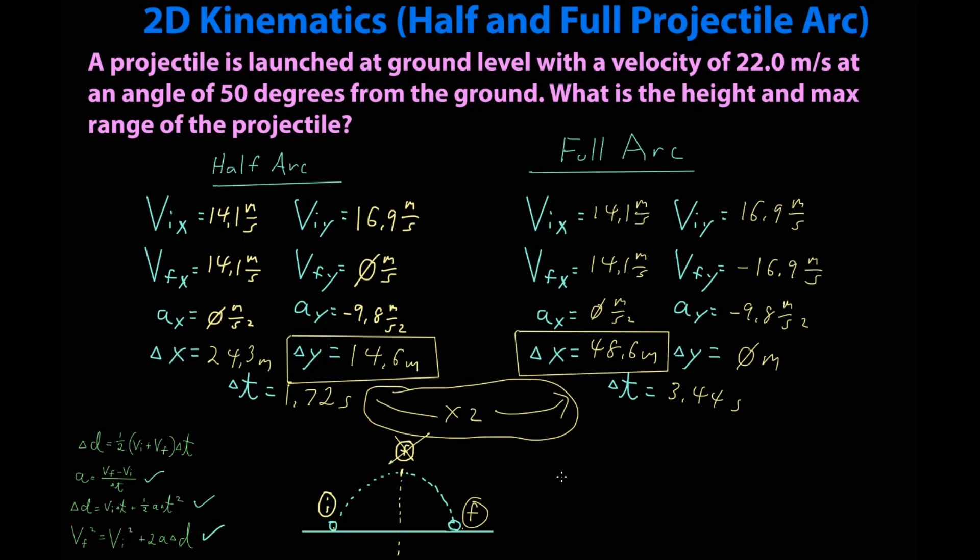So a little side note: if you're ever asked to get the height and the max range and you know it's going to be a full arc problem, going from half arc to full arc is a lot easier than doing it in reverse. So I always recommend doing it in this order.